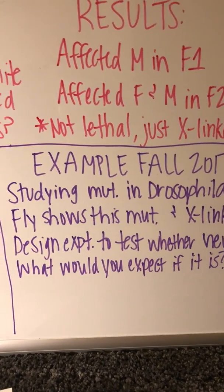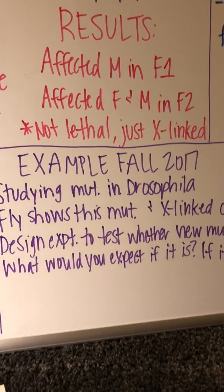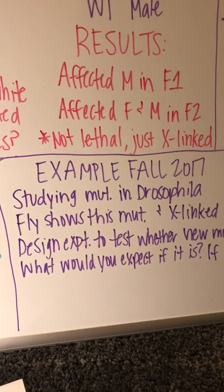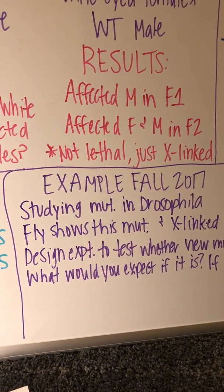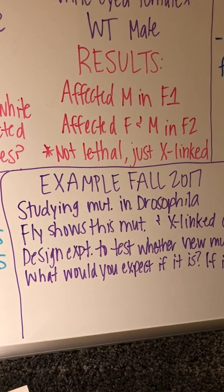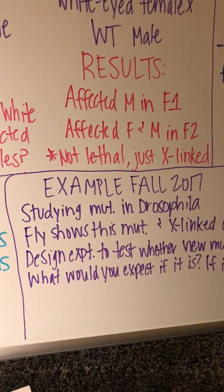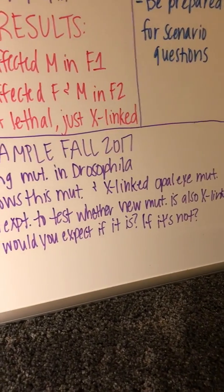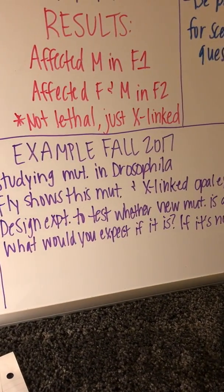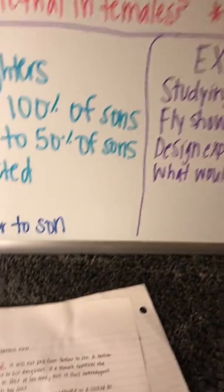Here is the practice problem: you are studying a mutation in Drosophila that causes the flies to move in an uncoordinated manner. You have created a fly that shows the phenotypes of both this recessive mutation and the X-linked opal eye mutation. Design an experiment to test whether this new mutation is also on the X chromosome. What would you expect if it is, and what if it's not?